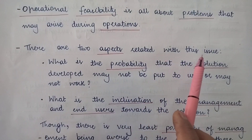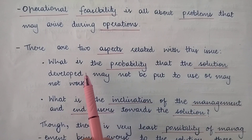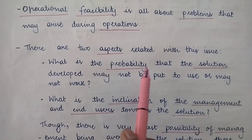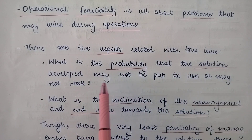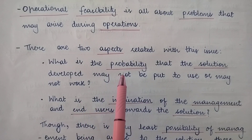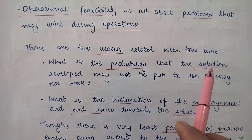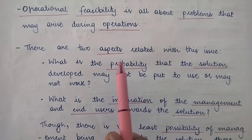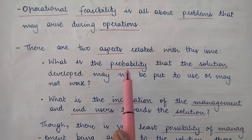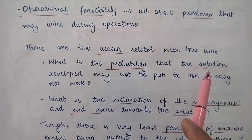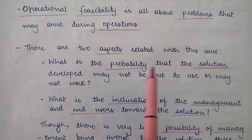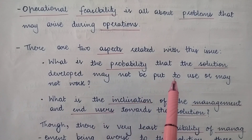There are two aspects related with this issue. The first aspect says: what is the probability that the solution developed may not be put to use or may not work? So you are developing a new information system — a new information system project, or you may call it a solution. This feasibility study evaluates what is the probability that this particular solution or information system which is being developed may not be put to use or it may not work.